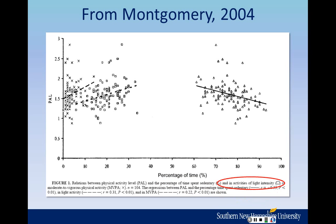They also looked at percentage of time spent performing activities of light intensity — these data are little squares on the graph. And they also looked at the percentage of time that children spent performing moderate to vigorous physical activity, and those are the little x's on the graph. So this graph has three different variables — percentage of time — being compared to physical activity level. These are called scatter plots, and there just happen to be three scatter plots on one figure because the x-axis is the same.